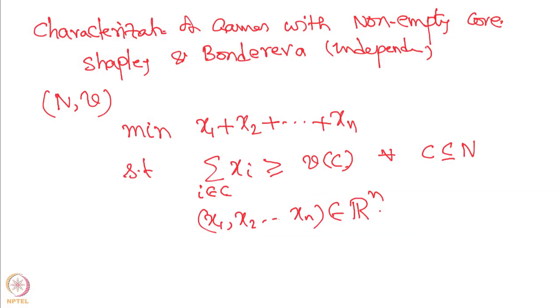This LP determines the minimum amount of transferable utility which is necessary for an allocation so that no coalition can improve upon it. This LP definitely has a solution if it is feasible. Since all the inequalities are of the greater-than type and there is structure making it feasible — for example, each x₁ has a lower bound — one can verify from a linear programming argument that there is a solution to this problem.